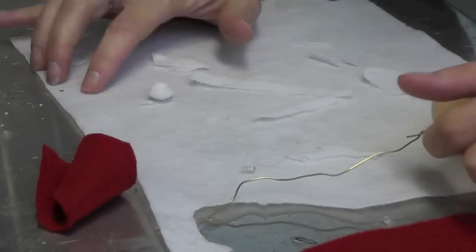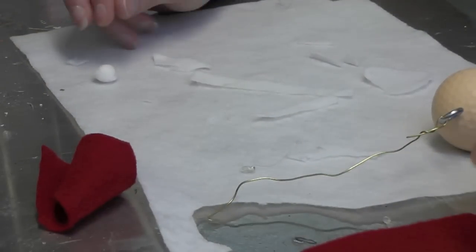You're going to need felt, a little white pom-pom, felt in red, felt in white, and some acrylic paint. We're going to paint on the face.